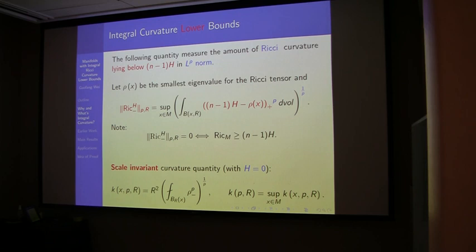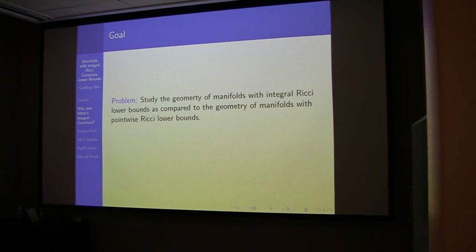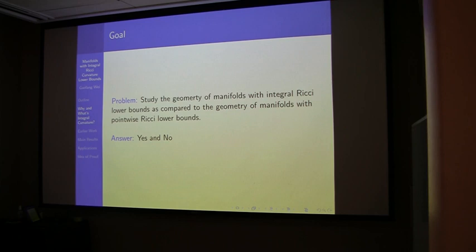The focus of the problem: we have many results about manifolds with pointwise Ricci curvature lower bounds — can we extend them to integral curvature, which is of course a much weaker assumption? That is the general big question. The short answer is: sometimes yes, sometimes no. Let me start with what's not working.